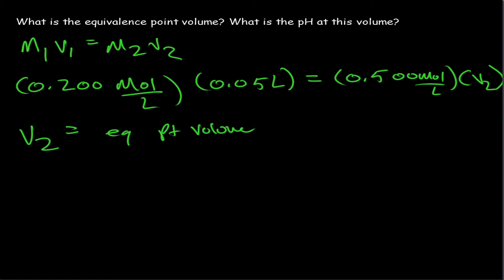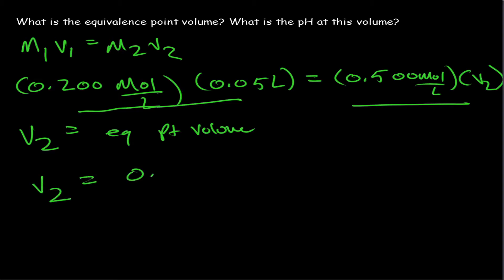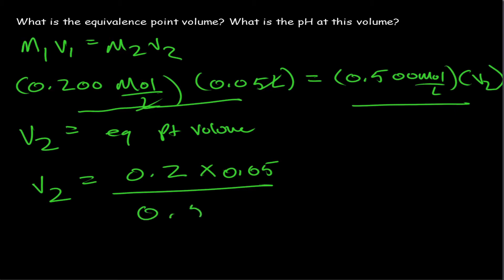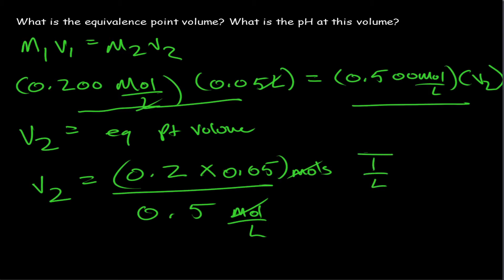It is considered the equivalence point volume because the moles on this side equal the moles on the other side. To calculate V₂: 0.2 times 0.05 divided by 0.5. Liters cancel out, and we get a value of 0.02 liters, which is 20 mL.